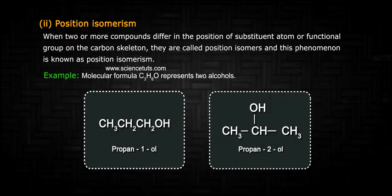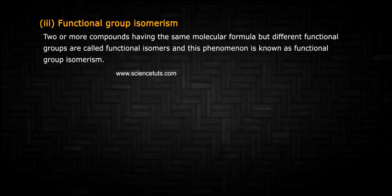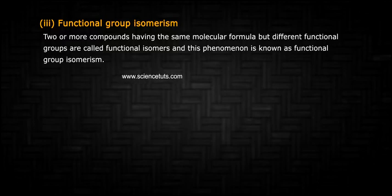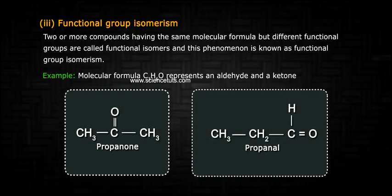Example: molecular formula C3H8O represents two alcohols. 3. Functional group isomerism: compounds with the same molecular formula but different functional groups are called functional group isomers. Example: molecular formula C3H6O represents an aldehyde and a ketone.